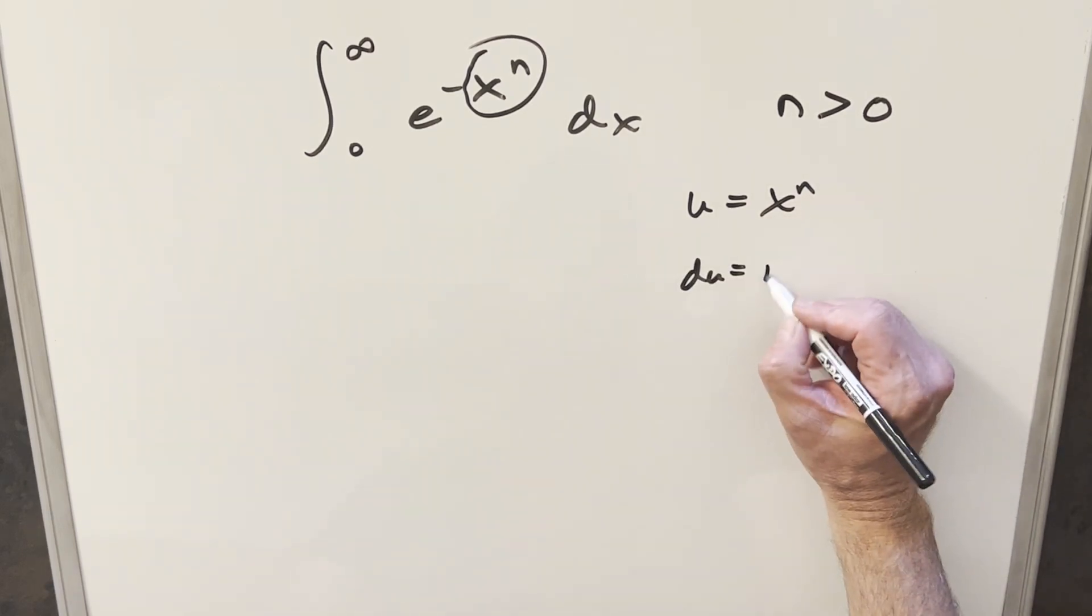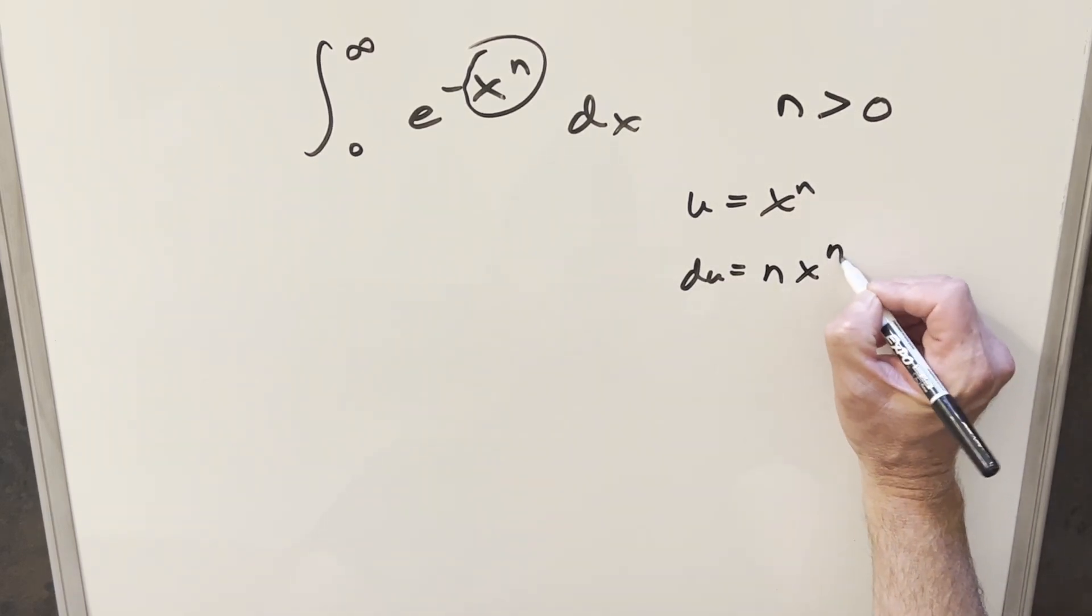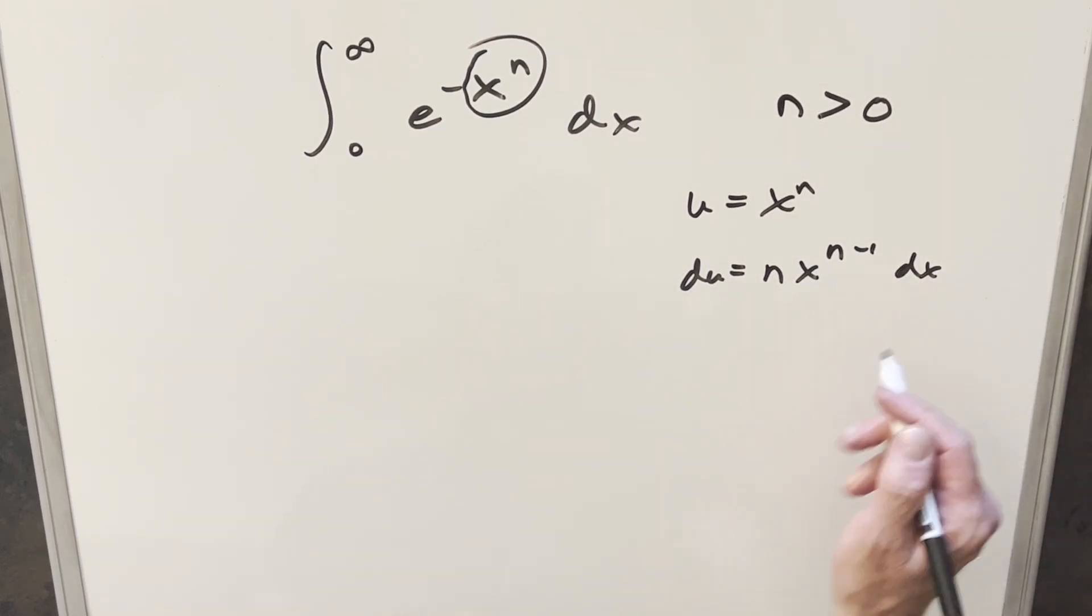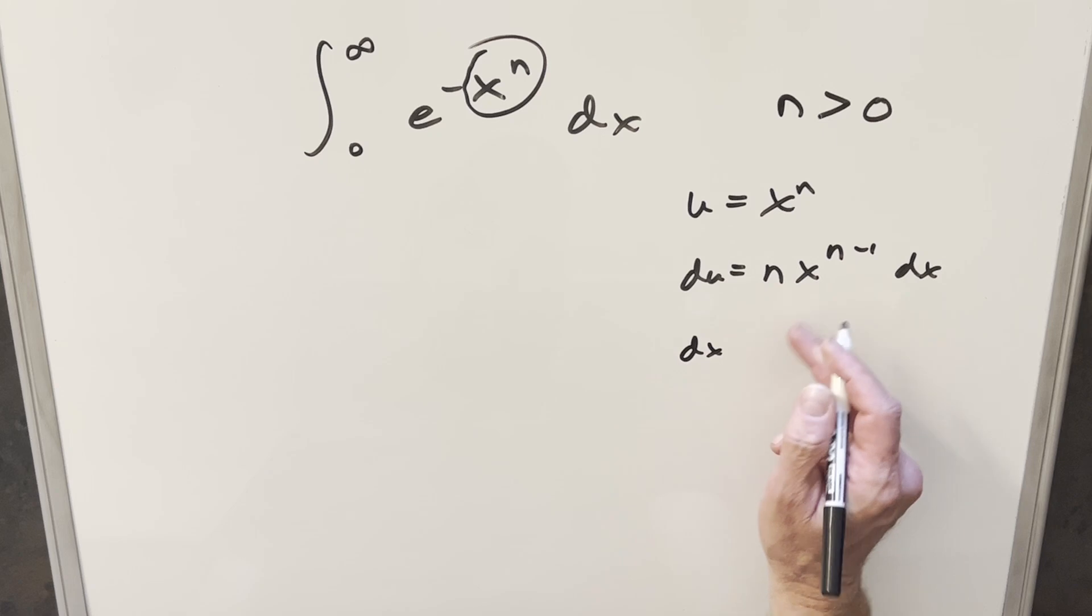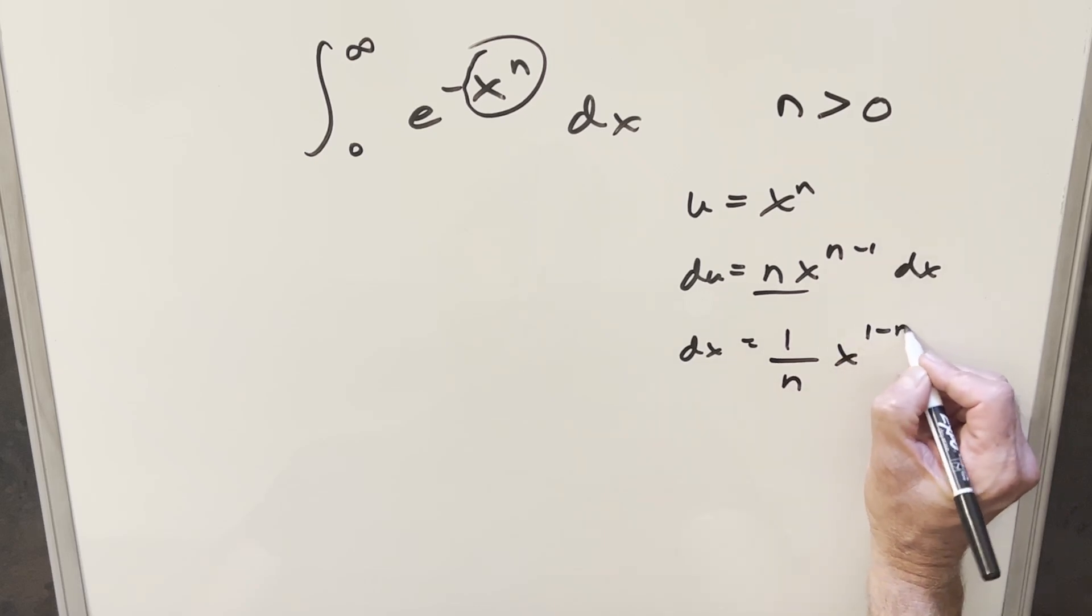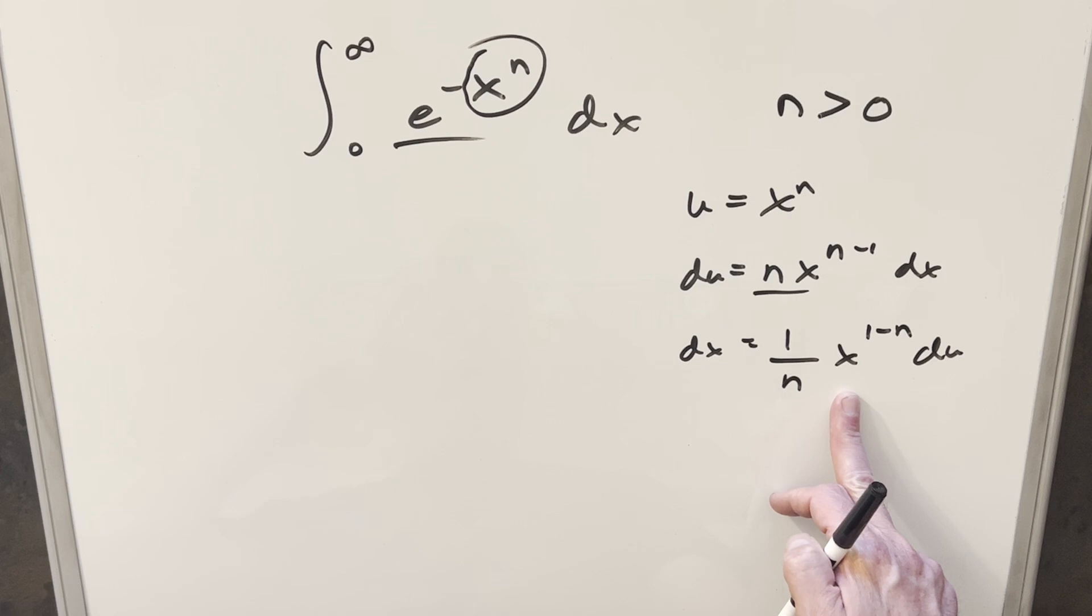The derivative of x^n is n times x^(n-1) dx. Then I'll rearrange this to solve for dx. Dividing both sides, this becomes 1 over n, and reversing the exponent we get x^(1-n) du.